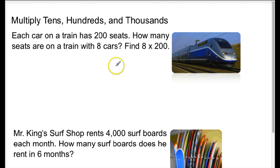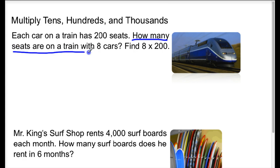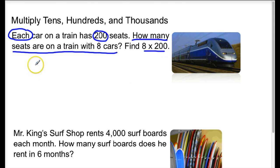Each car on a train has 200 seats. How many seats are on a train with 8 cars? Find 8 times 200. So the question that we're trying to answer is how many seats are on a train with 8 cars? Each car on a train has 200 seats, and the multiplication that we're going to use is 8 times 200.